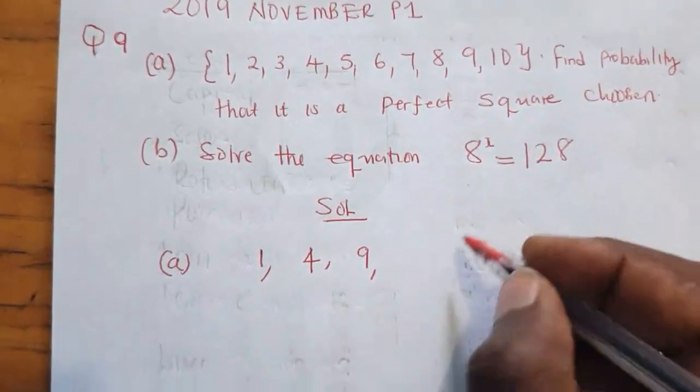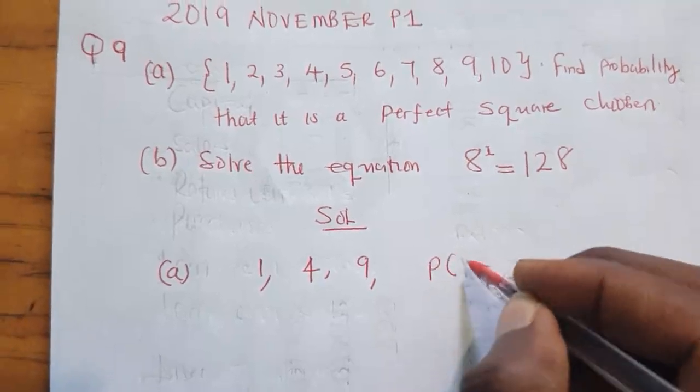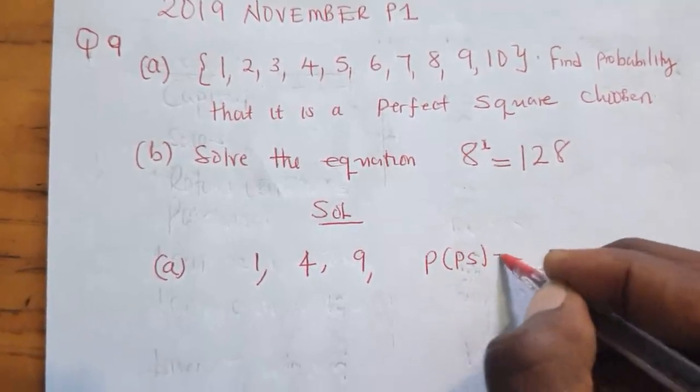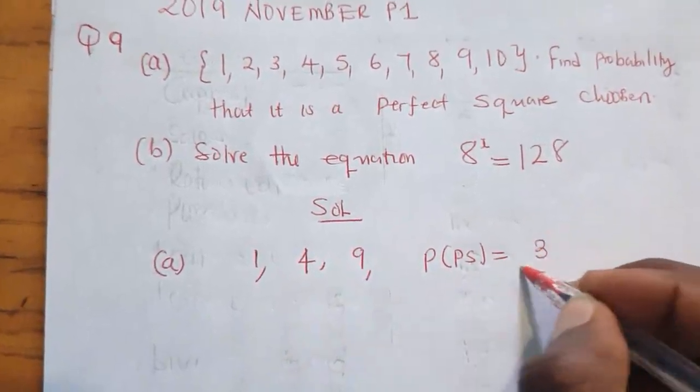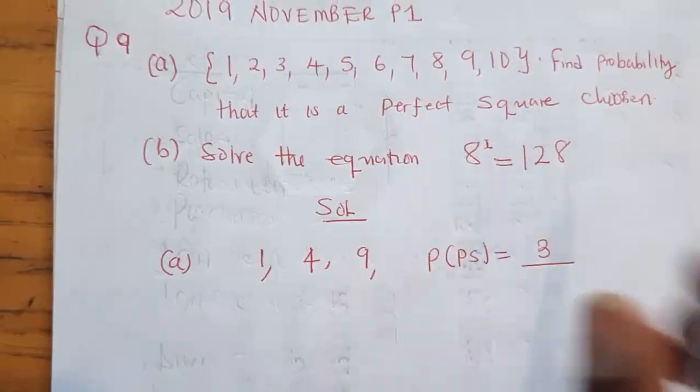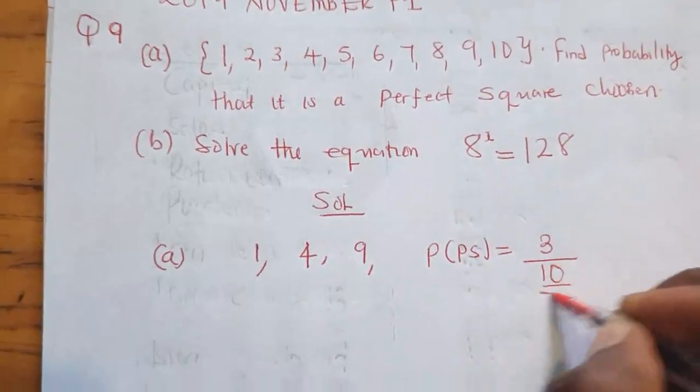So since we have three numbers, the probability of a perfect square would be equal to 3 over how many numbers are here? They are 10, so out of 10. So this is the probability.